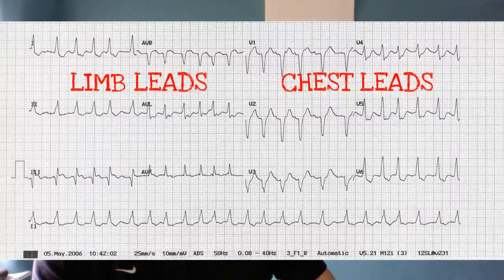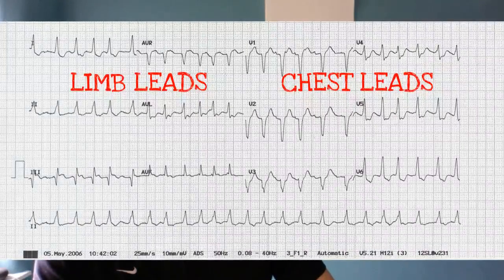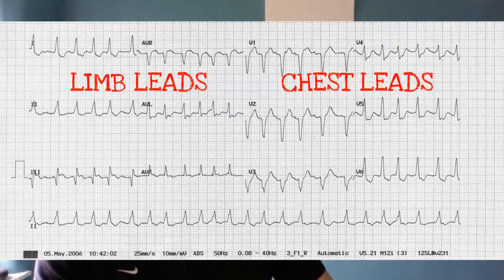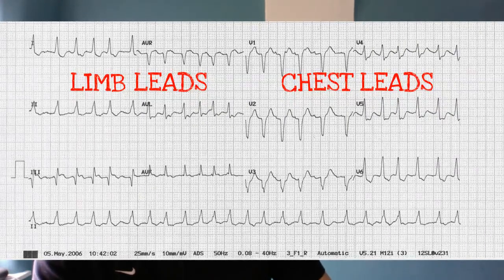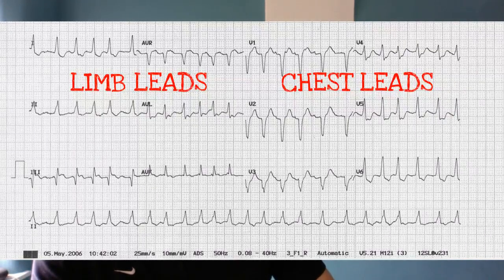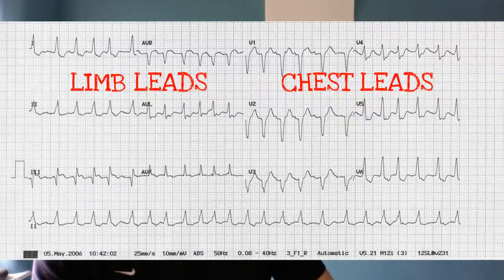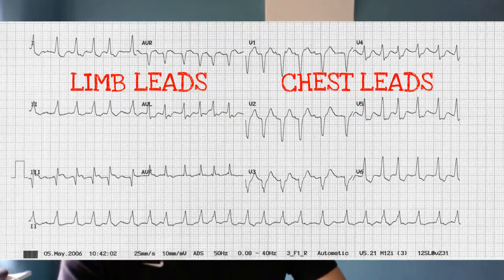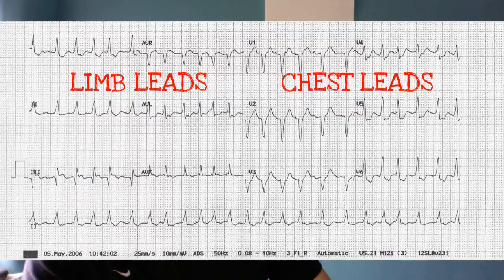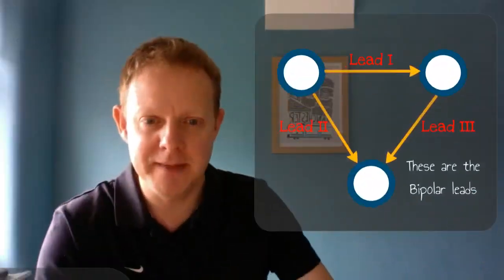The limb leads are 1, 2, 3, AVR, AVL, AVF, and then we've got the chest leads V1 to 6. By the end of this, in a few minutes, you're going to understand which direction each of these leads is looking in, so which part of the heart it's examining, and I'm going to show you a system to remember that so you never, ever forget it.